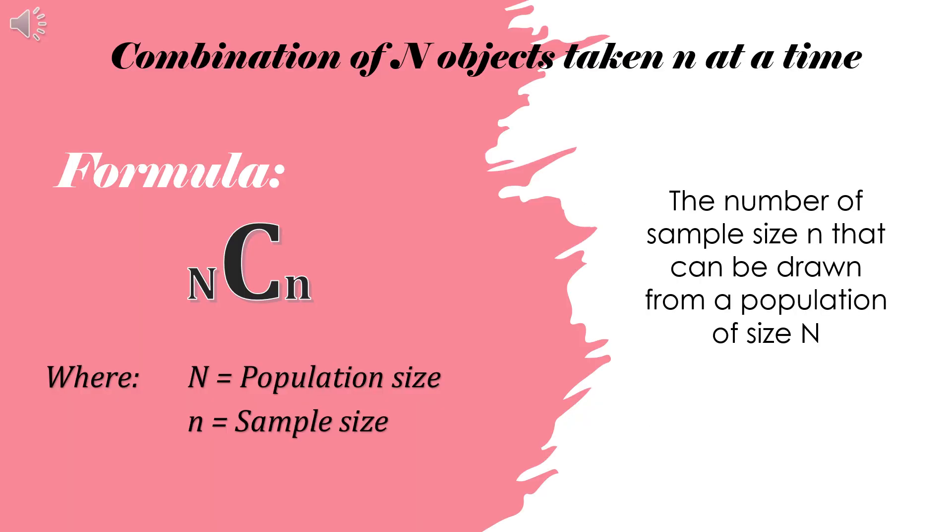Now, I will introduce the formula. Copy the formula while listening. We have NCn, where big N is population and small n represents the sample size. This formula only tells us that the number of sample size n that can be drawn from a population of size N is given by NCn, or the combination formula.